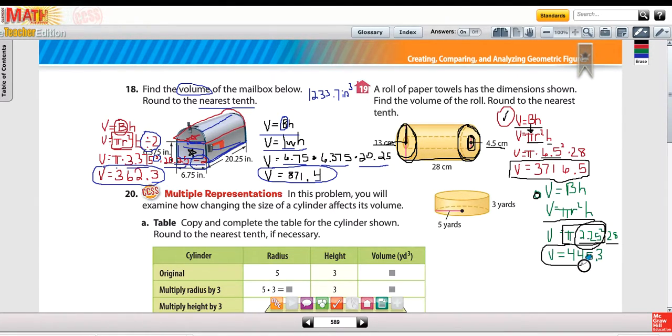The middle tube is 445.3. So if I want to find the roll's volume I want to take the outside right here and take away the inside, so when you subtract those two out you should get 3,271.2.